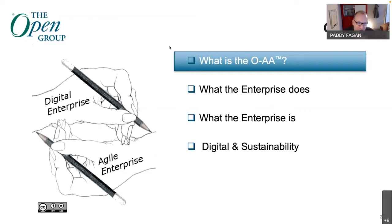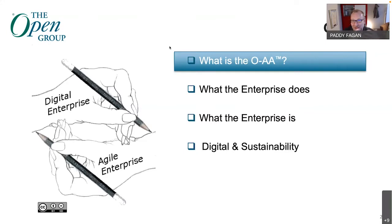The picture on the leftmost edge of this diagram shows two hands drawing each other with pencils. Ignoring the impossibility of such a drawing, the key theme it represents runs through the OAA: that a digital enterprise and an agile enterprise are co-linked. From the perspective of the OAA, if you want one, you're going to end up with the other. This is useful for organizations that approach a digital transformation and find themselves thrust into an agile transformation, or vice versa — the two are co-linked.